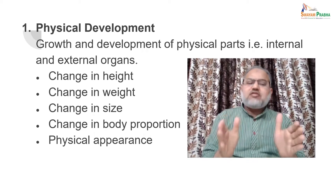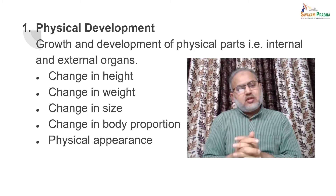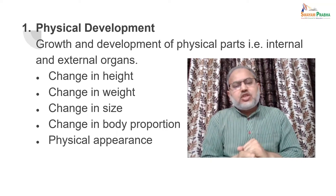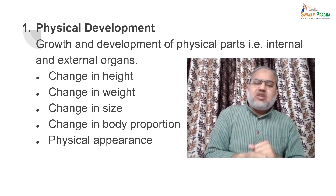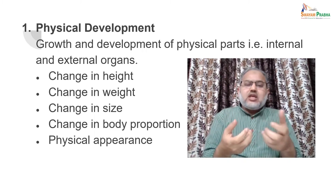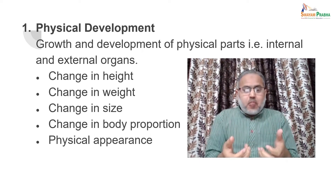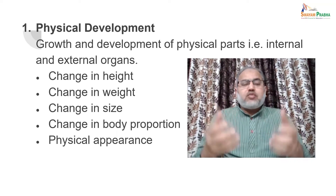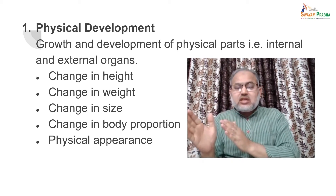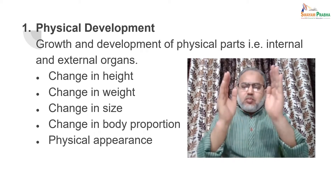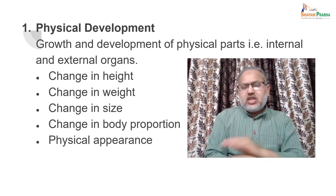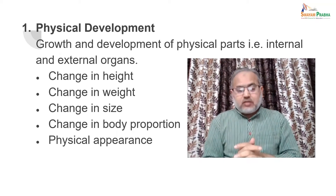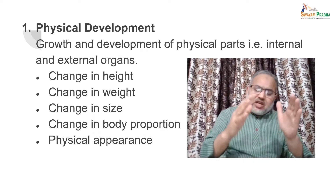First, let's talk about physical development. Physical objects are those which have physical existence. Similarly, physical development refers to developments which take place in the body of an organism — either internal or external — and which result in the growth and development of body parts. The main components of physical development include change in size, change in weight, change in height, change in body proportion, and change in physical appearance of a growing child.